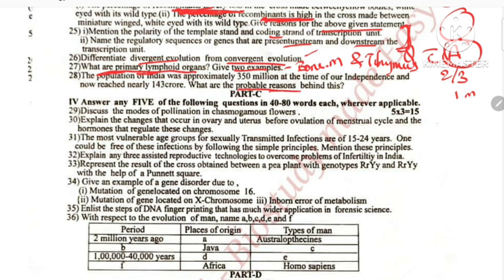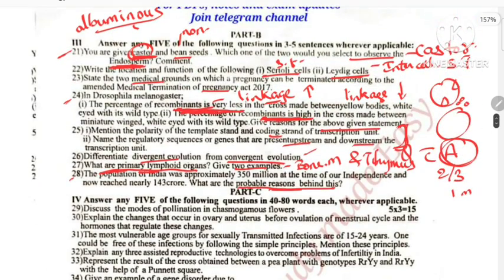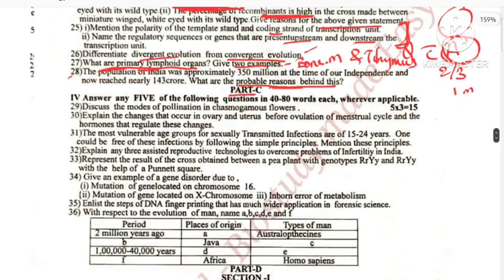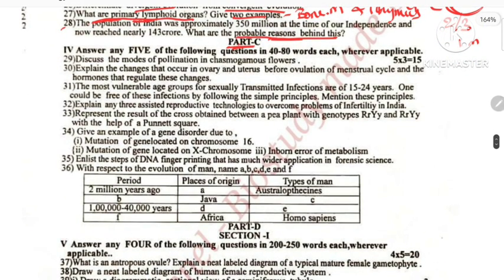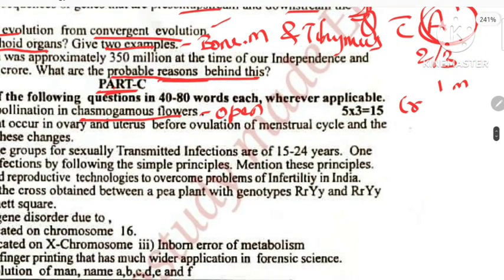Population explosion — reasons — question 28. Part C: modes of pollination. Chasmogamous flowers are open flowers. Open flowers allow both cross pollination and self pollination. Ovulatory phase — before ovulation, the follicular phase and ovulatory phase — you save the hormones. Preventive methods of STD.